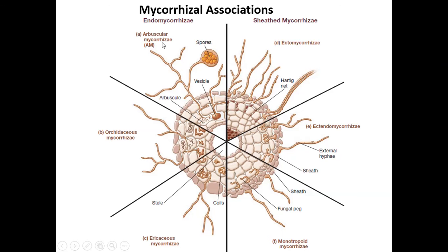Endomycorrhizae is also called arbuscular mycorrhiza, or VAM — vesicular arbuscular mycorrhiza. Because this fungi is internal, living inside the cell, you can see the vesicles being formed inside the root threads, and these are the arbuscular regions. Because of these vesicles and arbuscular regions, they are called VAM.